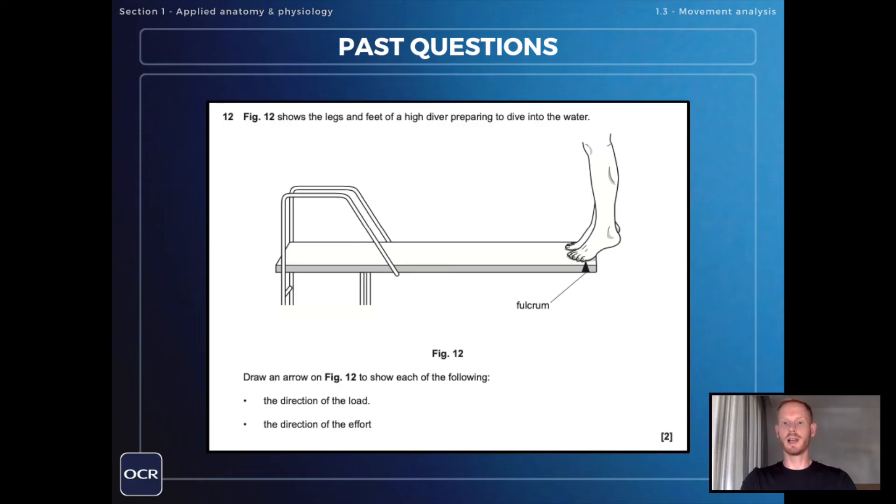Figure 12 shows the legs and feet of a high diver preparing to dive into the water and the fulcrum has already been labeled on the diagram. Draw an arrow on figure 12 to show each of the following: the direction of the load and the direction of the effort. As we know the load force comes from the weight of the body and therefore should be directed downwards and the effort force from the gastrocnemius muscles opposes the load force and should therefore be directed upwards.